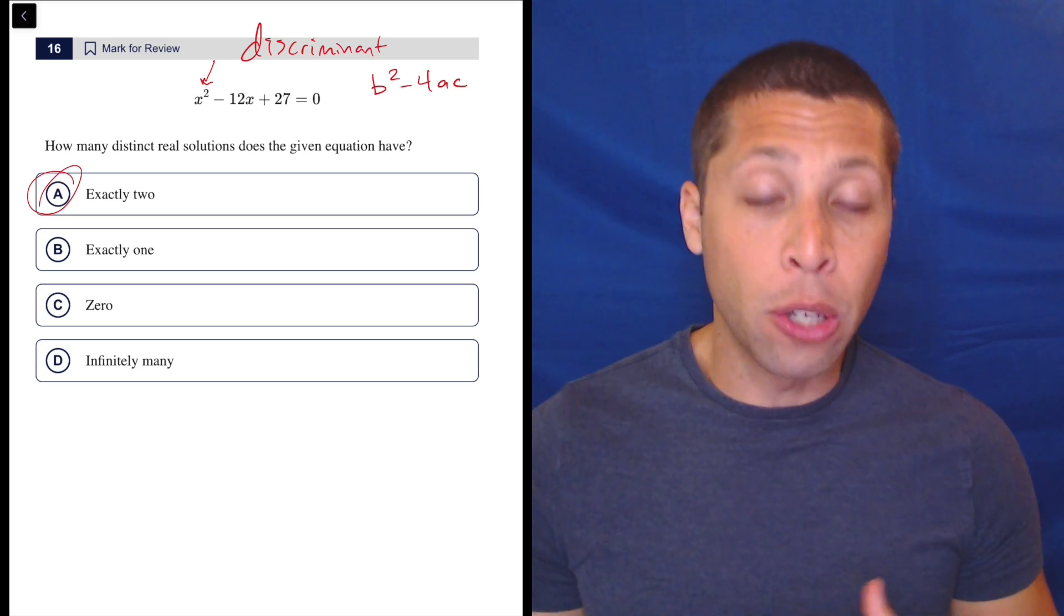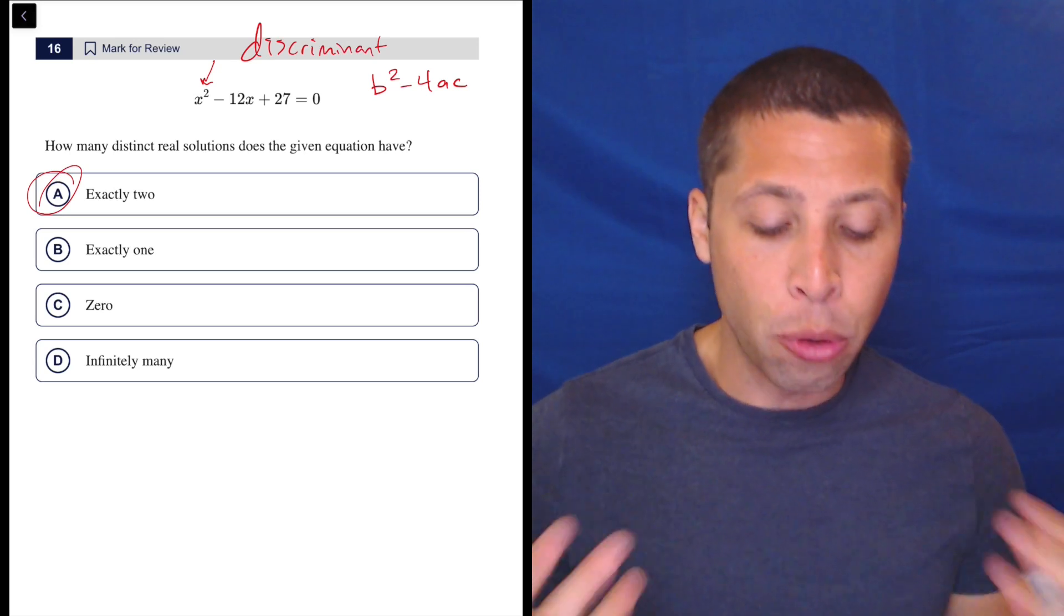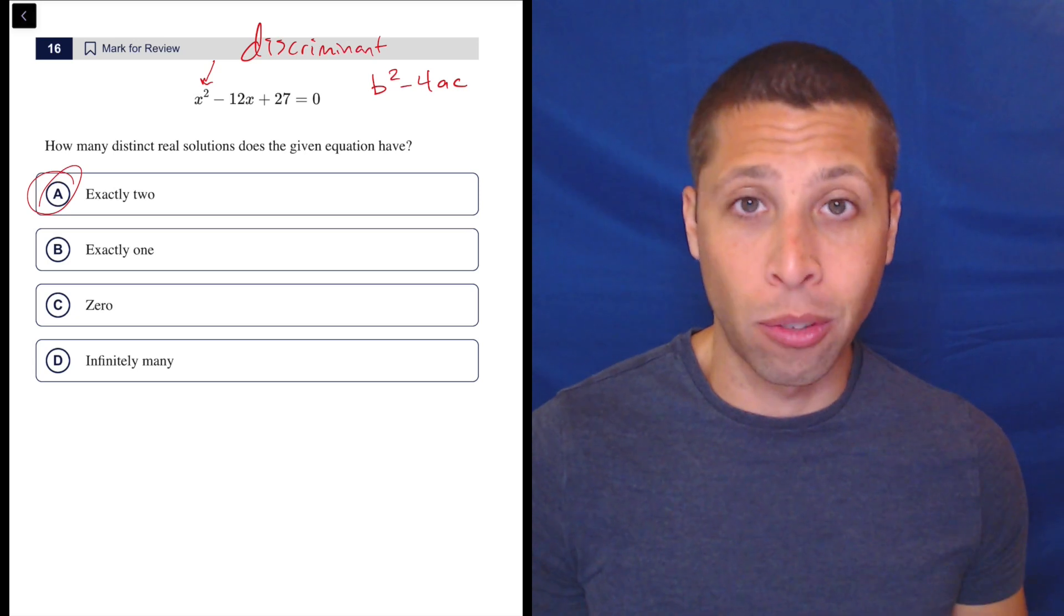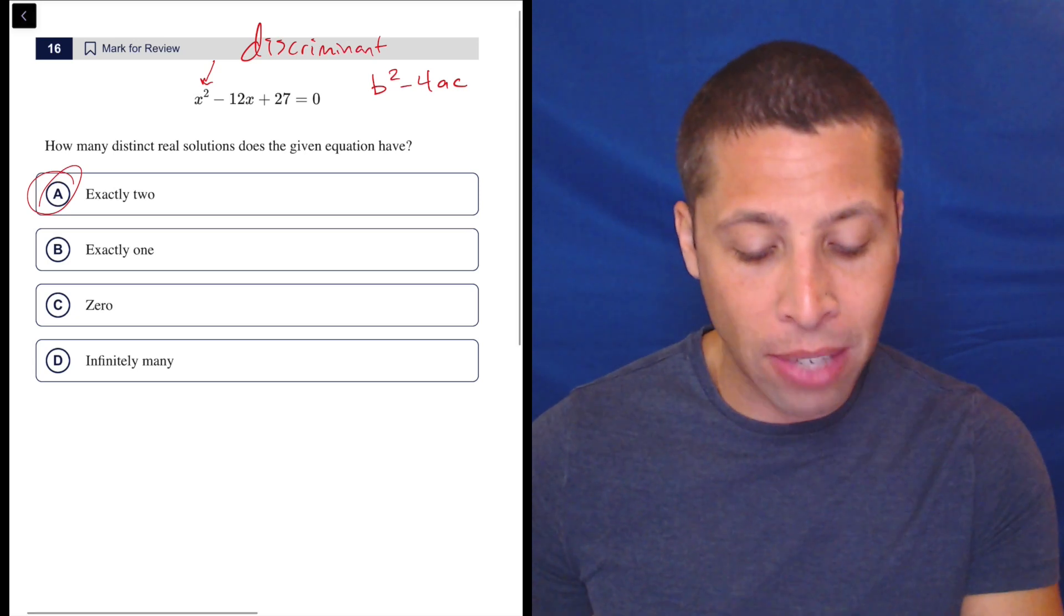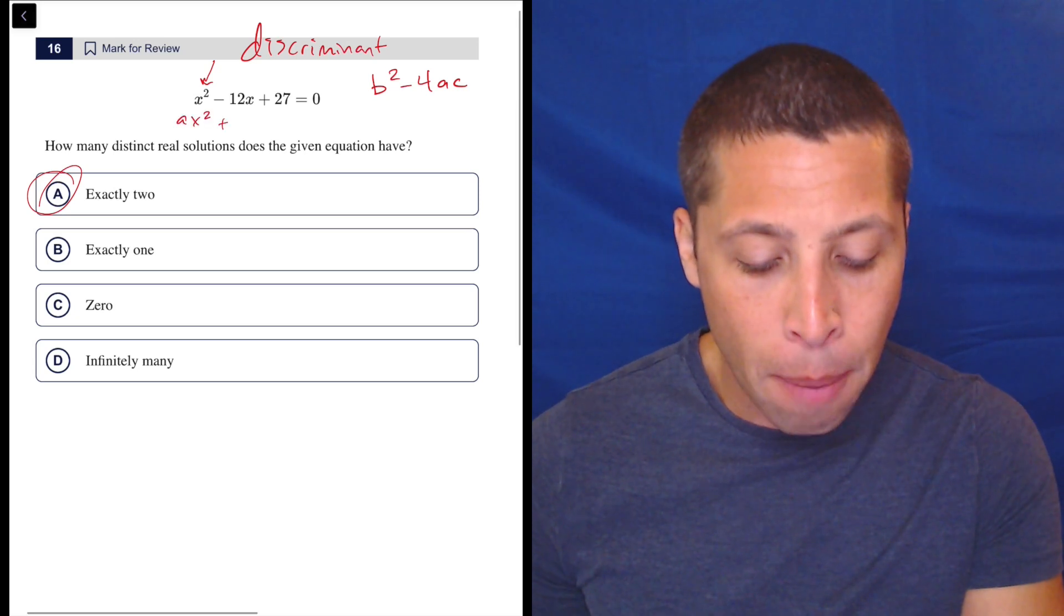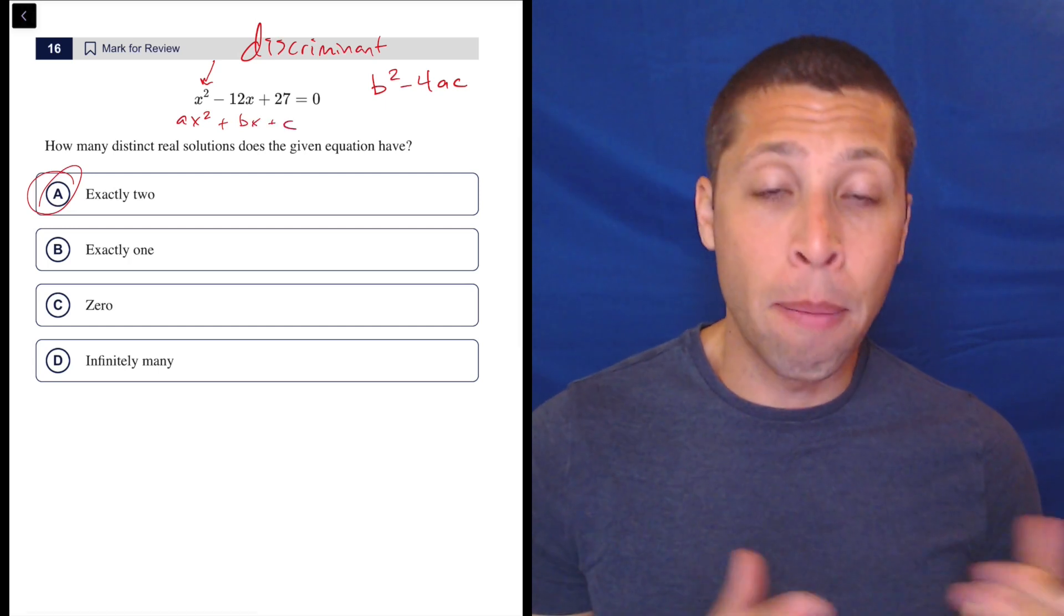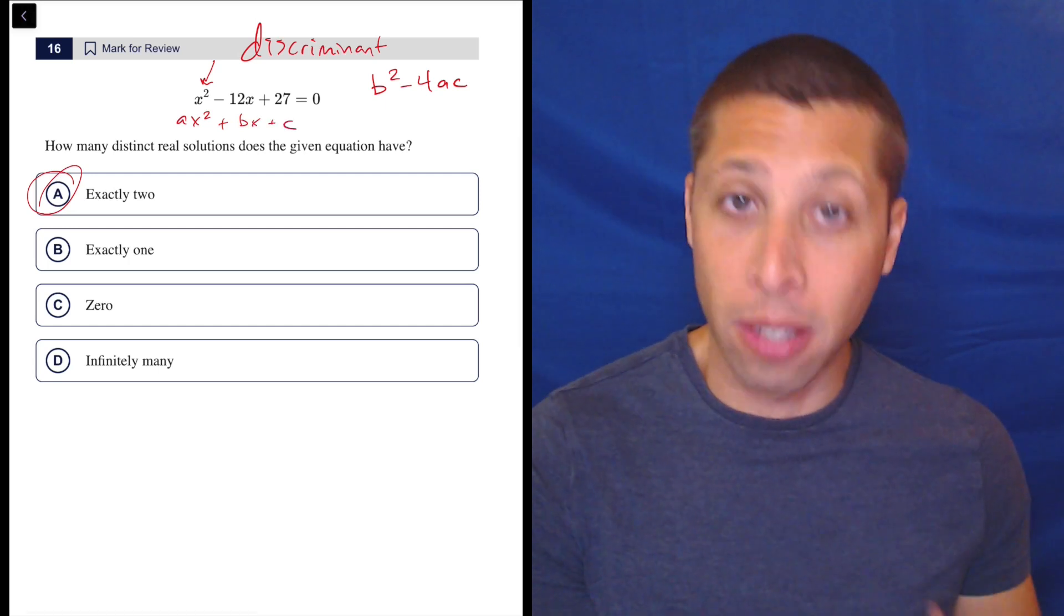And if we use the full quadratic formula, we'd be able to get the actual solutions. But if we just thought about the b squared minus 4ac part, we would get the number of solutions. And we have to get the a, b, and c by thinking about a parabola in standard form where the a and b and c correspond to the different components.